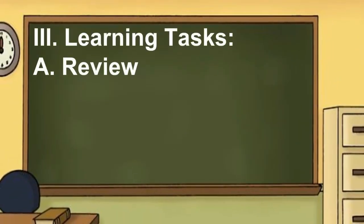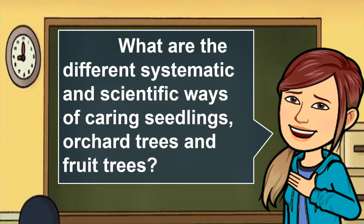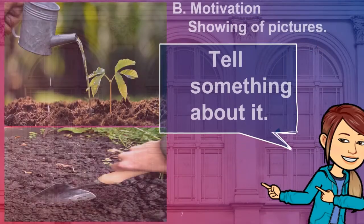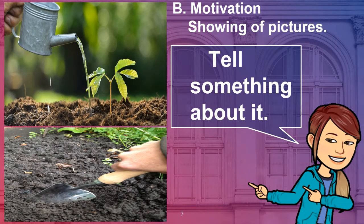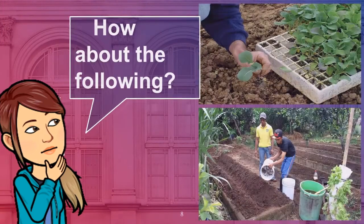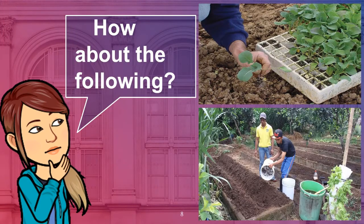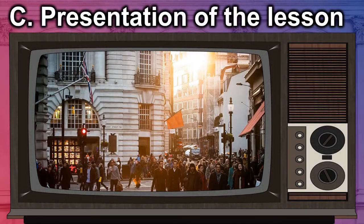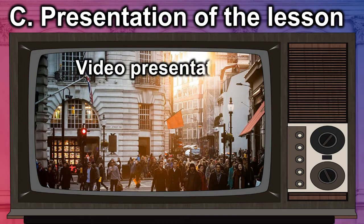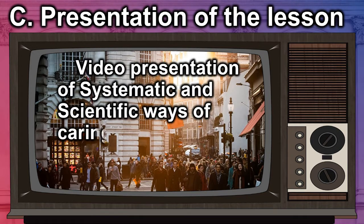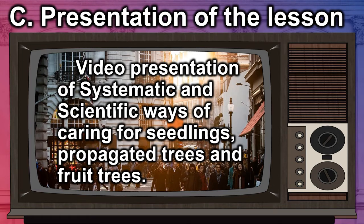Learning tasks review: What are the different systematic and scientific ways of caring for seedlings, orchard trees, and fruit trees? Motivation: showing of pictures — tell something about them. Presentation of the lesson: video presentation of systematic and scientific ways of caring for seedlings, propagated trees, and fruit trees.